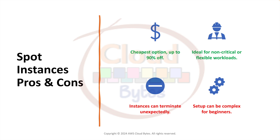Let's talk about spot instances. Spot instances are an opportunity given by AWS to allow customers to bid for unused EC2 capacity in the AWS cloud. Suppose AWS has 20 additional EC2 instances sitting idle — customers can bid and get those instances to fulfill their compute requirements. Spot instances can be purchased for up to a 90% discount, making this a very appealing option for cost-savvy engineers.